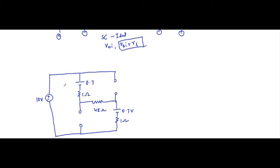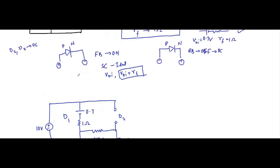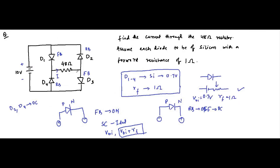This is D1, this is D3, this is D4, this is D2. This is the equivalent circuit. The ones which are reverse biased are replaced by open circuit, and the ones which are forward biased are replaced by their equivalent circuit: built-in potential and forward resistance.